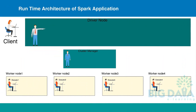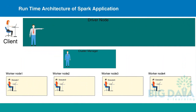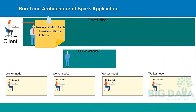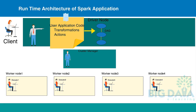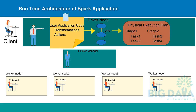Apache Spark uses master-slave architecture. The client submits a Spark user application code. When an application code is submitted, the driver implicitly converts user code containing transformations and actions to a Logical Directed Acyclic Graph (DAG). At this stage, it also performs optimizations, such as pipelining transformations. Then it converts the Logical Graph into a Physical Execution Plan with sets of stages.